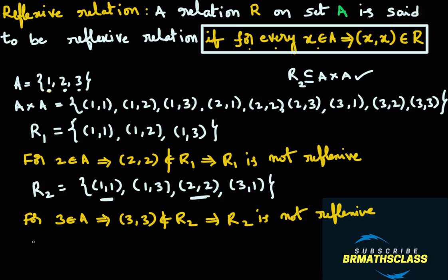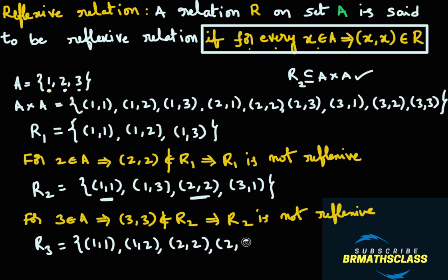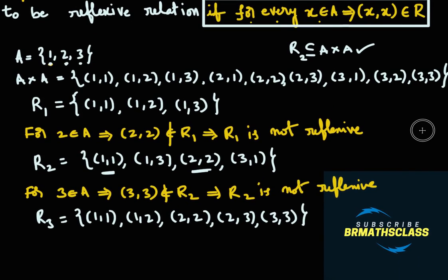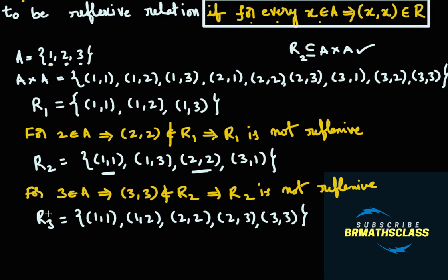Now we will try to understand this with one more example. I will take another subset of A cross A. Let R3 equal {(1,1), (1,2), (2,2), (2,3), (3,3)}. Is it a relation on A? Yes, it is a relation on A because it is a subset of A cross A. All the elements present in R3 are present in A cross A.